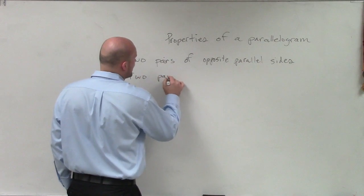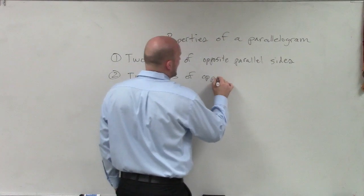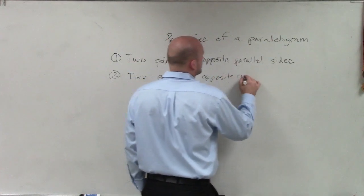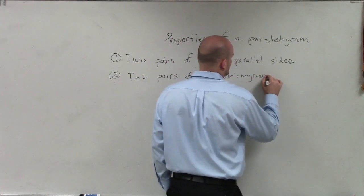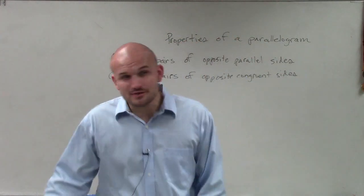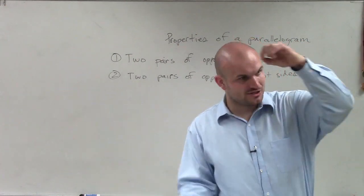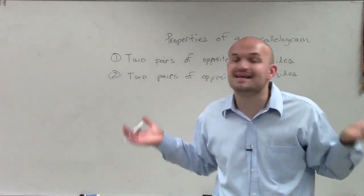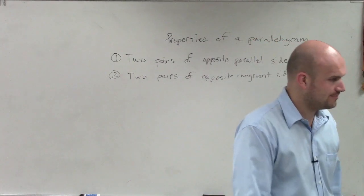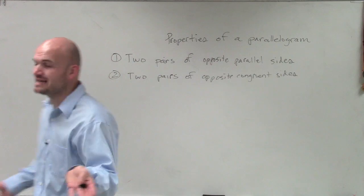What about if you have two pairs of opposite congruent sides? So guys, yeah, you can use the slope formula, but guess what? You can also show, hey, if these two sides and these two sides are equal in measure, then guess what? It's also a parallelogram.